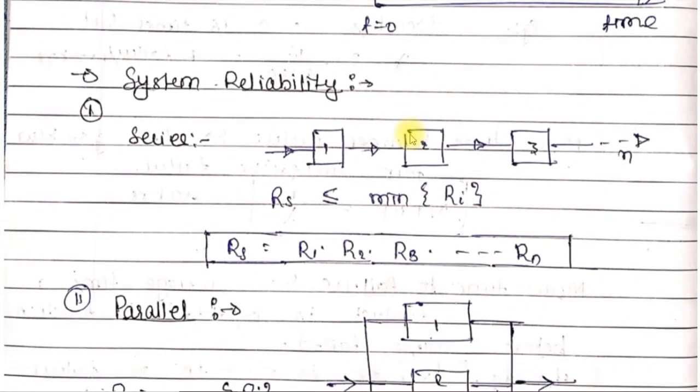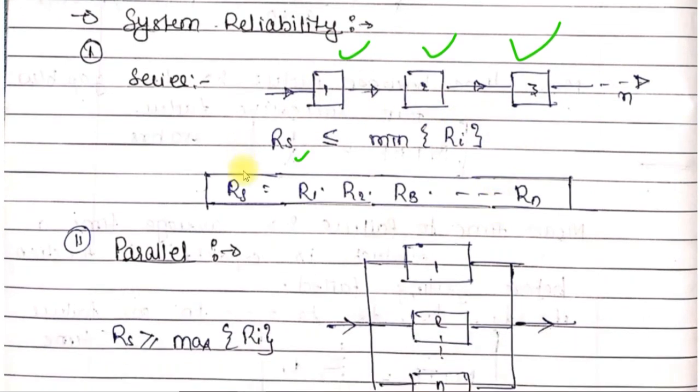Just as we calculate reliability of a product, similarly we calculate reliability of a system. Suppose there's a complete mechanical device made of many systems connected in series. If you look at this, if any one component has low reliability, the entire machine will fail together. This means your system reliability depends on the minimum reliability among all the systems connected in series. To calculate system reliability, simply multiply the reliability of all mechanical components in the system. The formula is Rs ≤ min{Ri}.